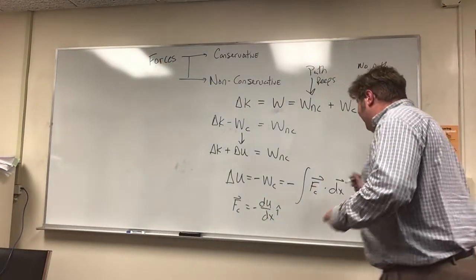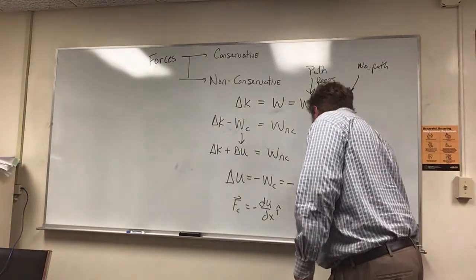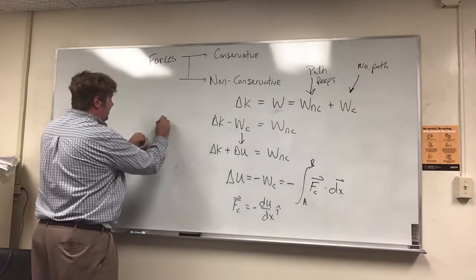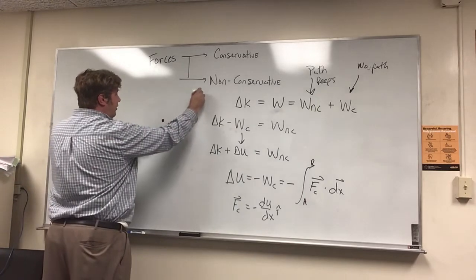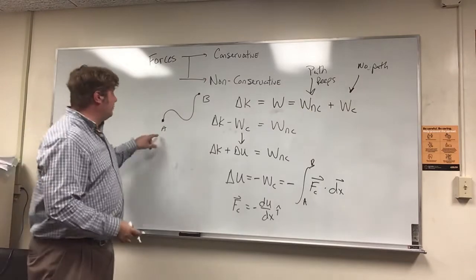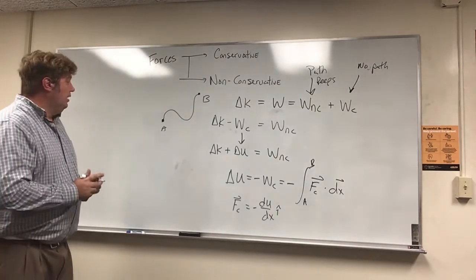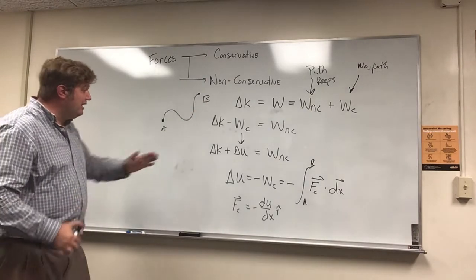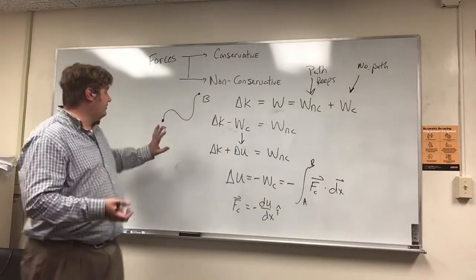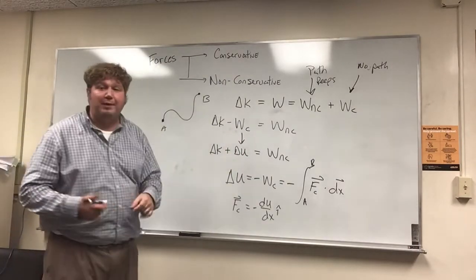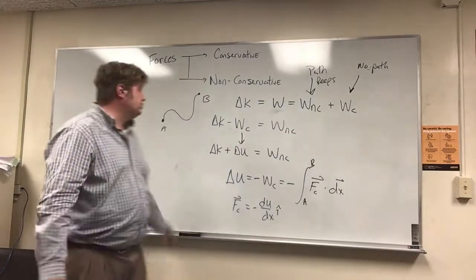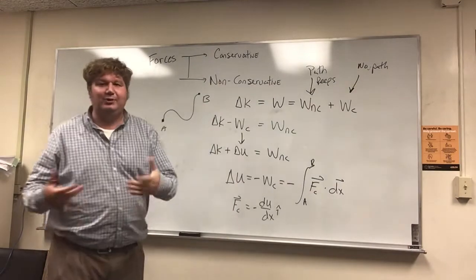Now this only depends on the endpoints, point A to point B. So if I'm going from point A here to point B, that's my path. Here's the great thing: everything on the left side of this equation only depends on the state at point A and the state at point B, whereas everything on the right side of the equation depends on the path between A and B.